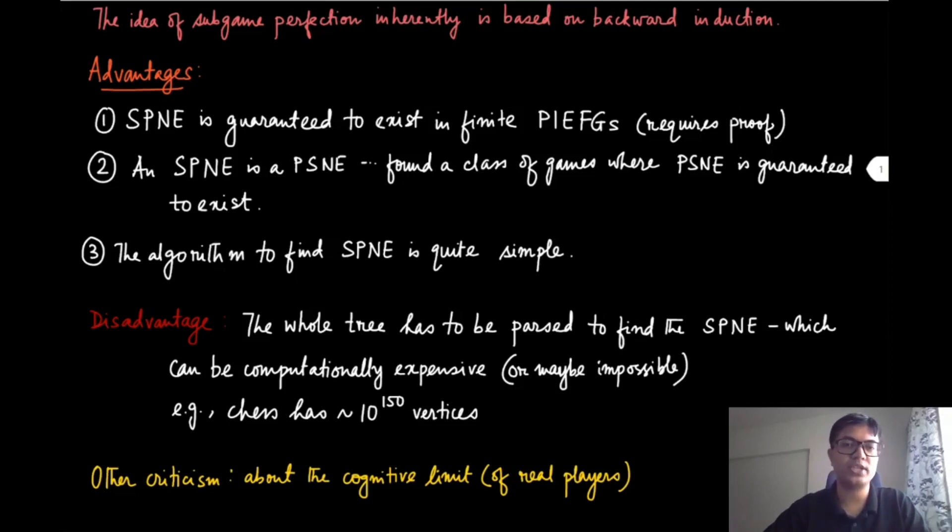We have also seen that the subgame perfect Nash equilibrium is a pure strategy Nash equilibrium for the entire game, because it is a Nash equilibrium at every subgame. We know that general normal form games may not have a pure strategy Nash equilibrium, but perfect information extensive form games are one class of games where pure strategy Nash equilibrium is guaranteed to exist.